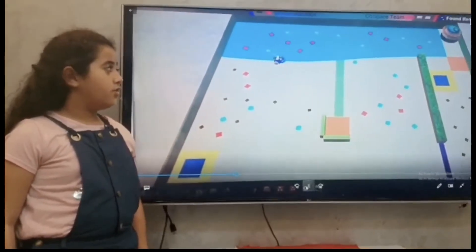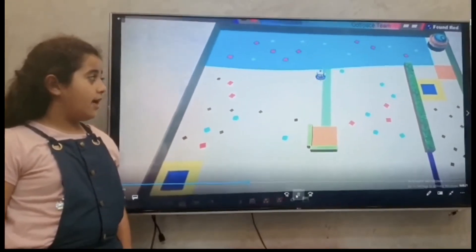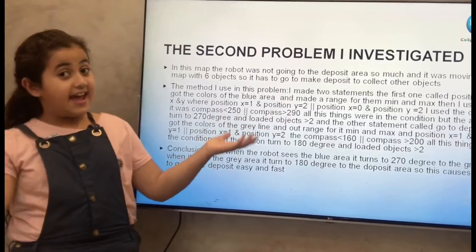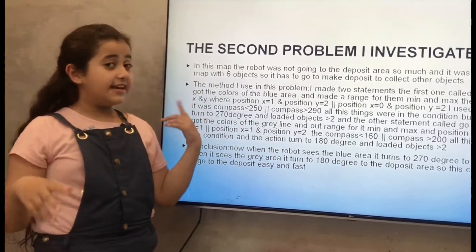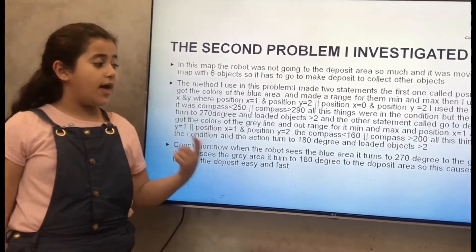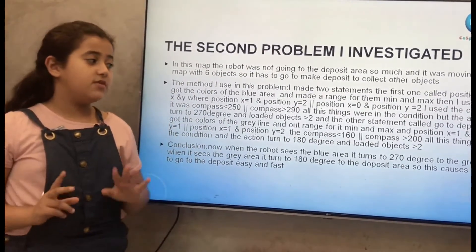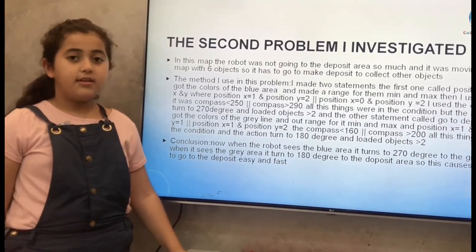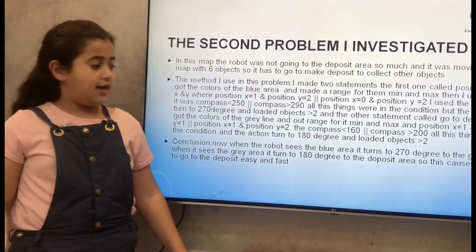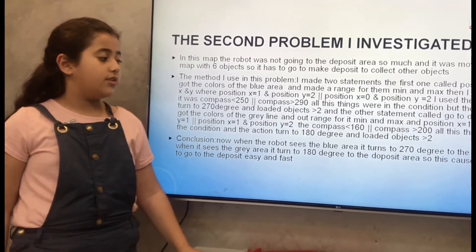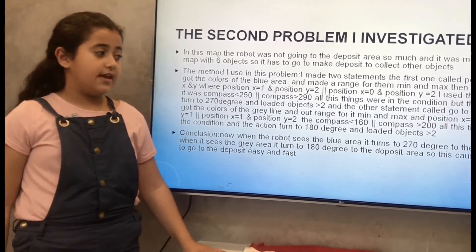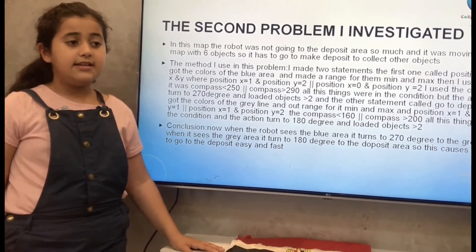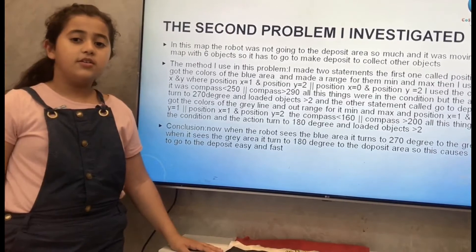Now the robot saw the blue area, then saw the gray line, then went to the deposit. The conclusion for the second problem: when the robot sees the blue area it turns to 270 degrees toward the gray line. Then when it sees the gray line it turns to 180 degrees to the deposit area. This causes the robot to go to the deposit area easily and fast, and the score increases and becomes high.